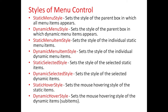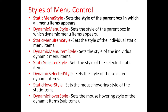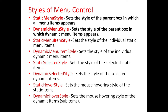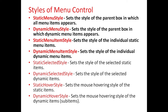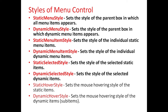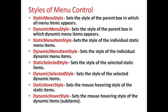Different styles of menu controls are: Static menu style, which is used to set the style of the parent box in which all menu items appear. Dynamic menu style sets the style of the parent box in which dynamic menu items appear. Static menu item style sets the style of individual static menu items. Dynamic menu item style sets the style of individual dynamic menu items. Static selected style sets the style of selected static items. Dynamic selected style sets the style of selected dynamic items. Static hover style sets the mouse hovering style of the static item, and dynamic hover style sets the mouse hovering style of the dynamic items.